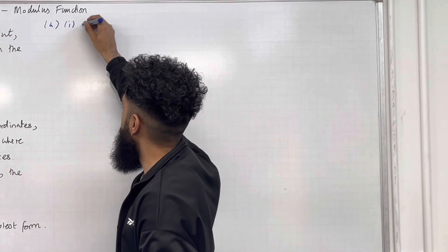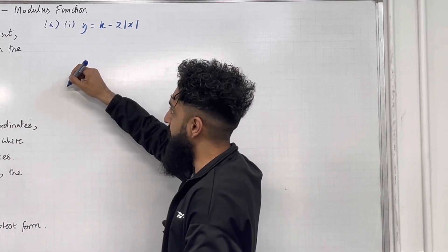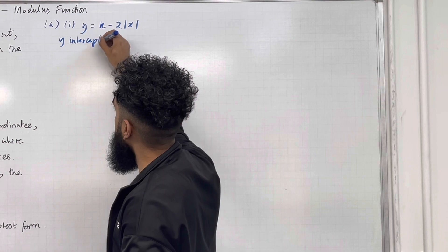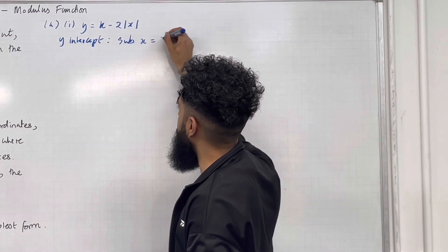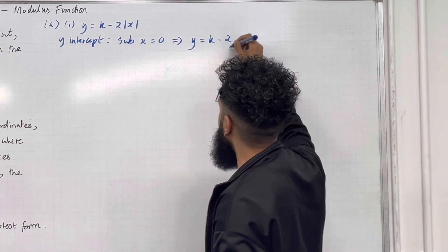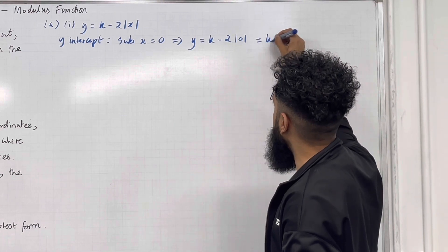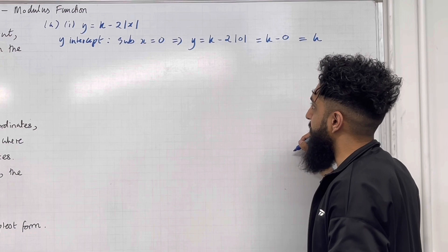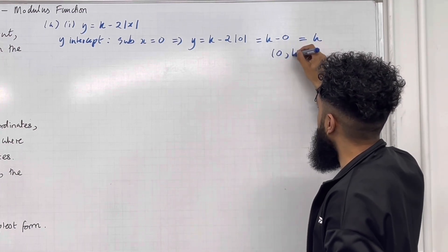So we want to sketch y = k − 2|x|. I'm going to start by finding the y-intercept. For the y-intercept, I substitute x = 0. This gives y = k − 2|0| = k − 0, hence y = k. So as coordinates, the y-intercept is (0, k).